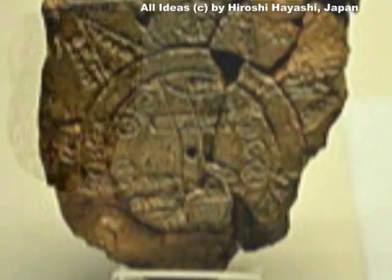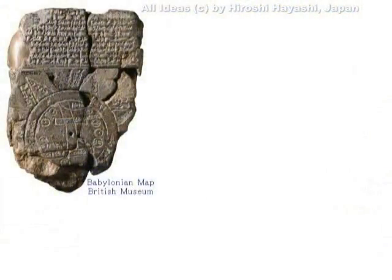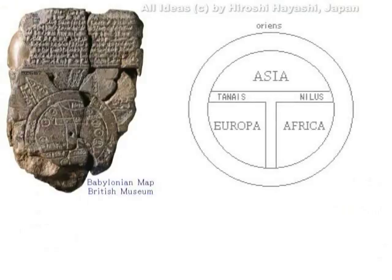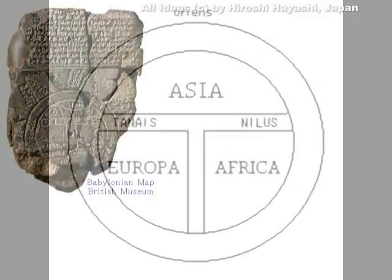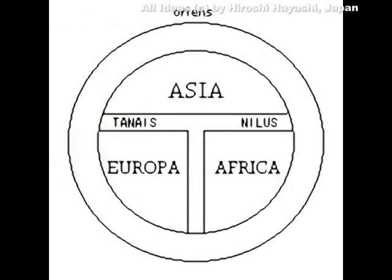今ご覧いただいているのが世界最古の地図と言われているものです。シュメールで発見されました。この地図で注意していただきたいのは、向かって左下がヨーロッパ、向かって右下がアフリカということになります。その間に地中海が横たわっています。そして上方がアジア、つまりアジア大陸ということになります。